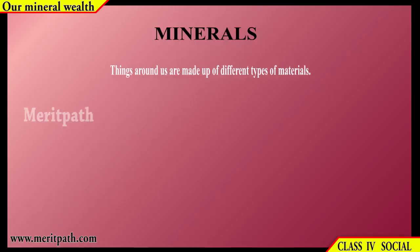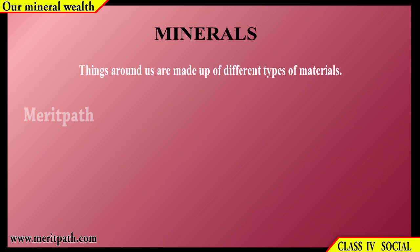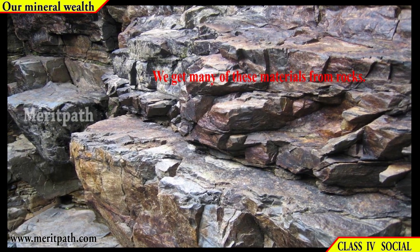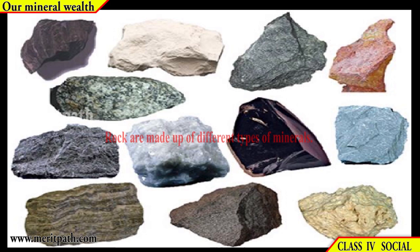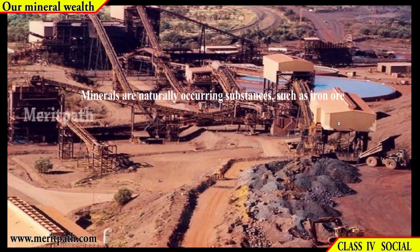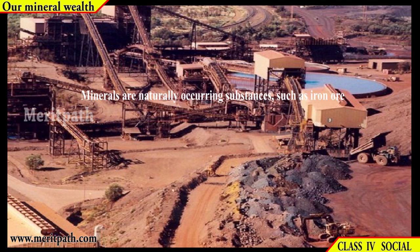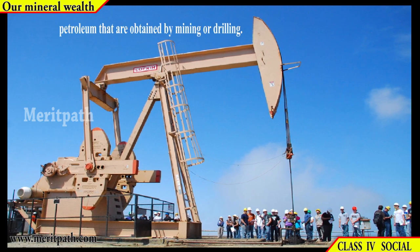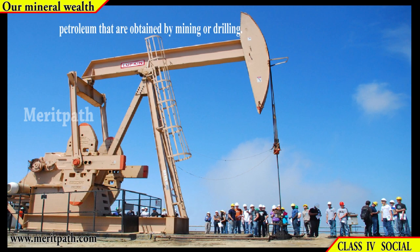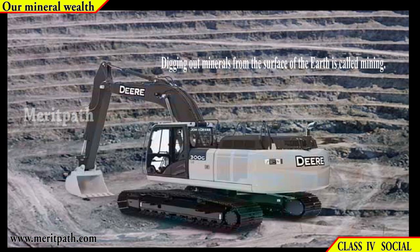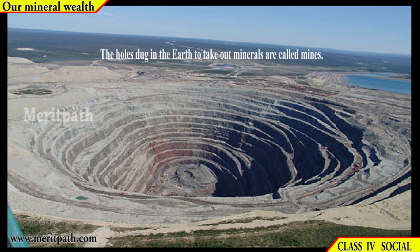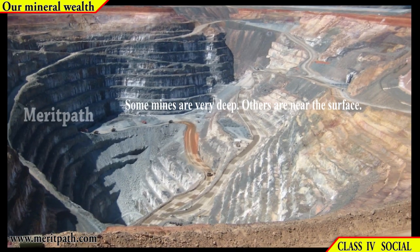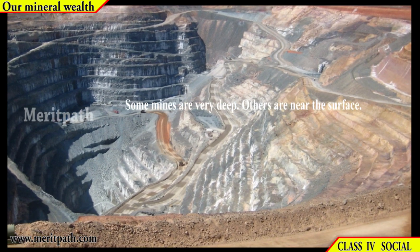Things around us are made up of different types of materials. We get many of these materials from rocks. Rocks are made up of different types of minerals. Minerals are naturally occurring substances such as iron ore, coal, or petroleum. These are obtained by mining or drilling. Digging out minerals from the surface of the earth is called mining. The holes dug in the earth to take out minerals are called mines. Some mines are very deep, others are near the surface.